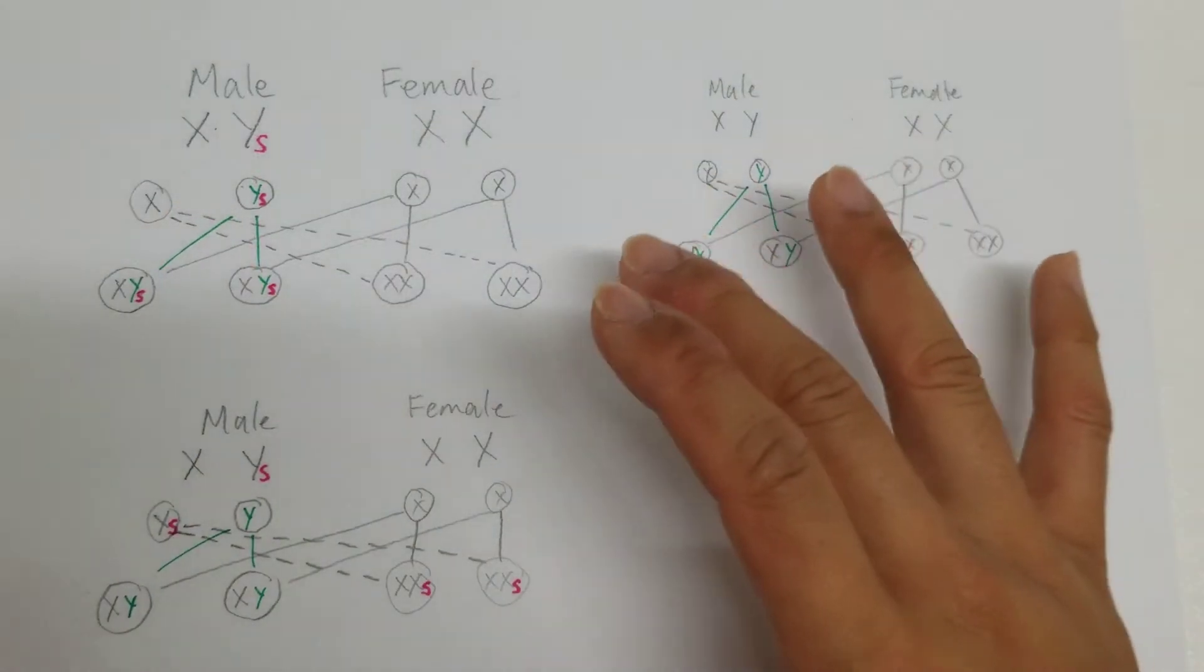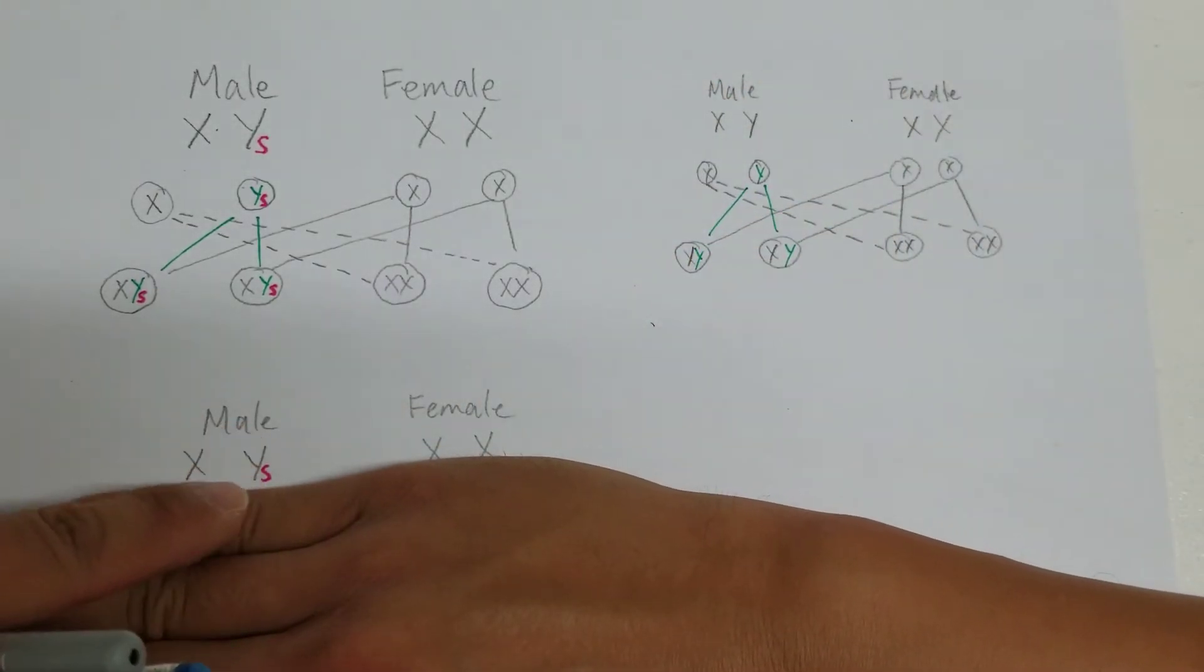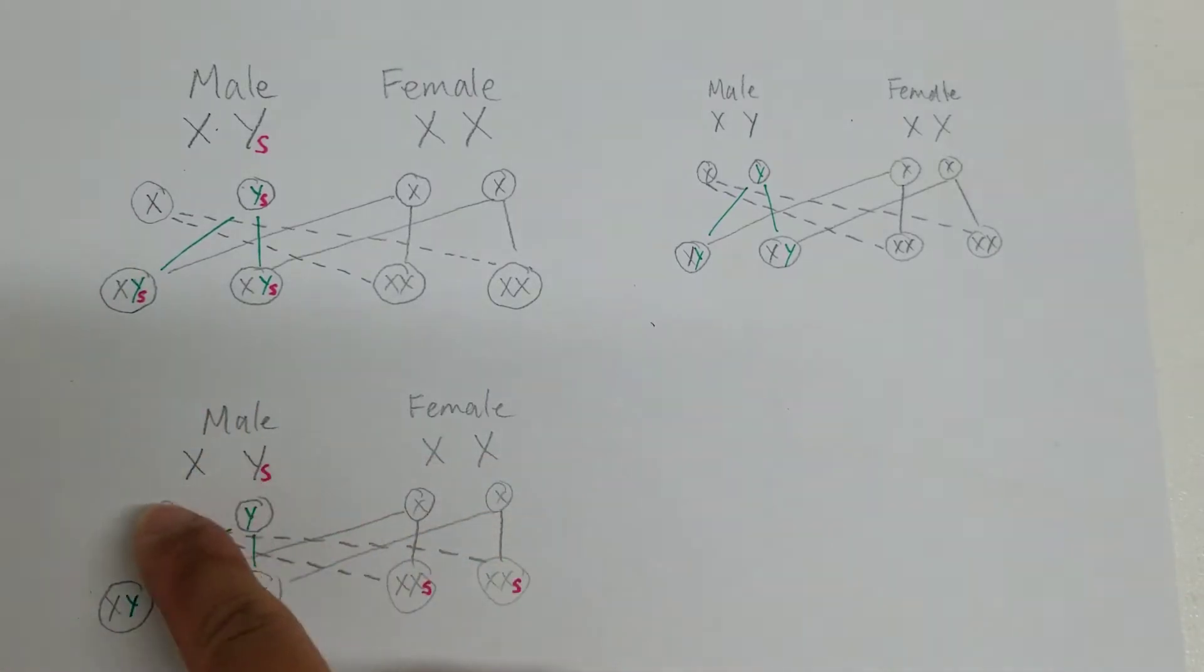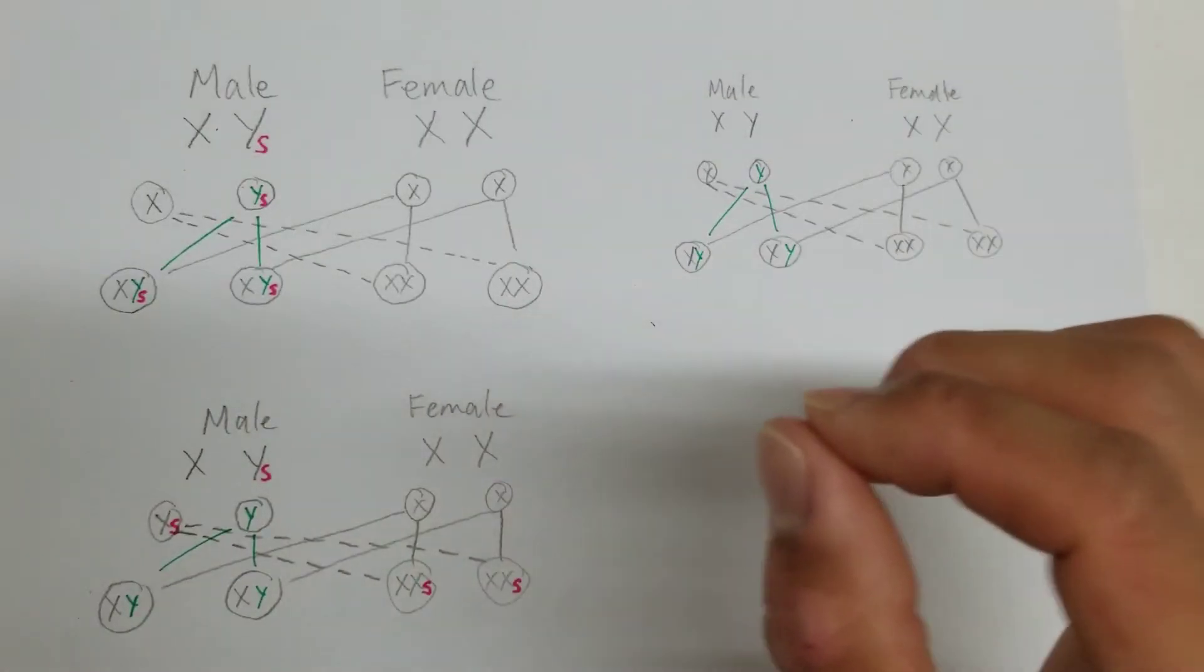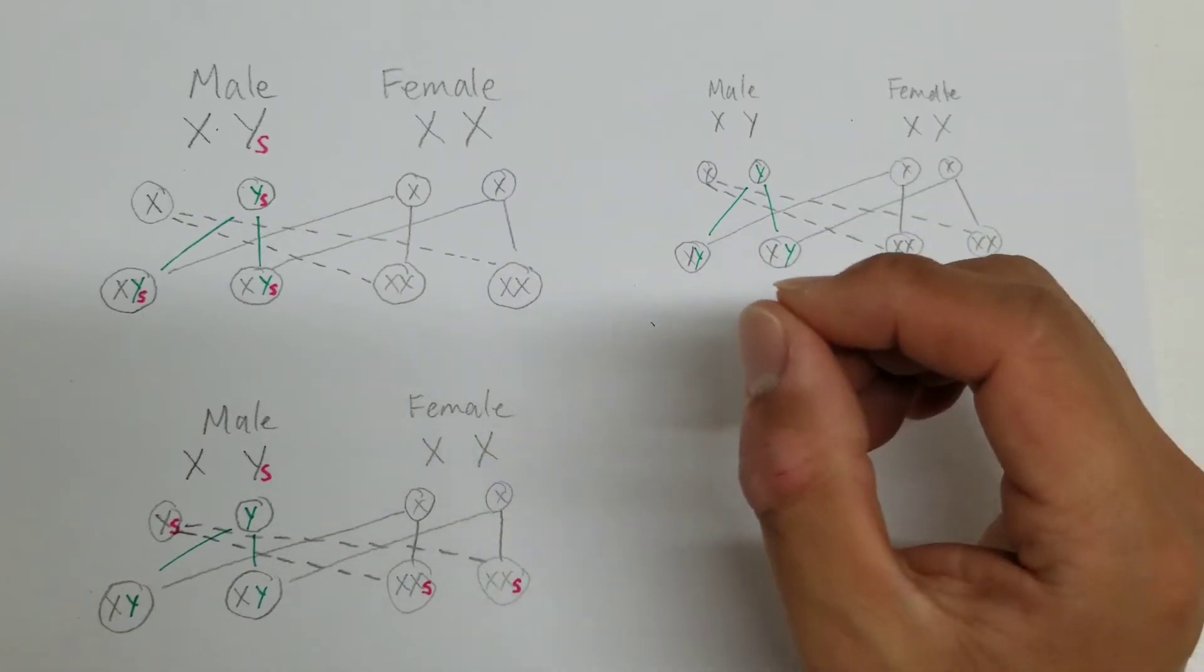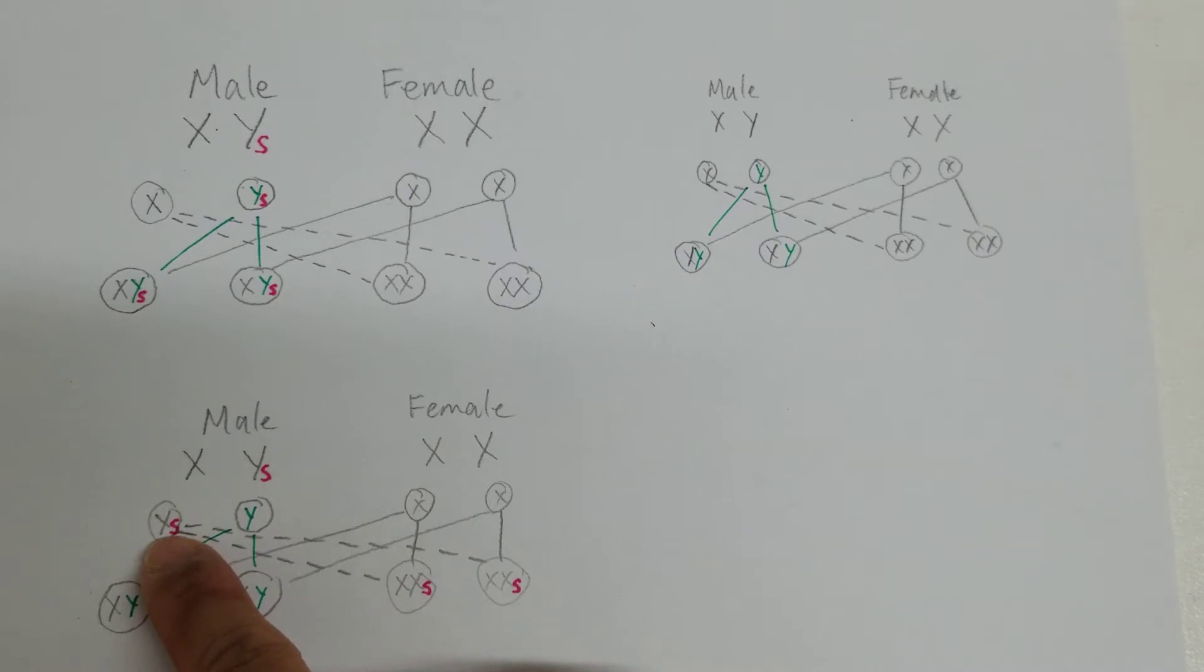Now to understand how that happens we can take a look at this diagram again. We'll start up here same way. We have the sex link gene attached to that Y chromosome and then through meiosis it'll produce the sex cells. But in that phase, in that moment when one of those cells divide, somehow that sex link gene somehow got transferred over to that X chromosome.